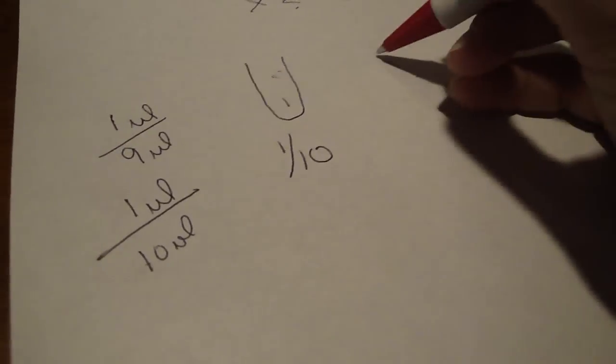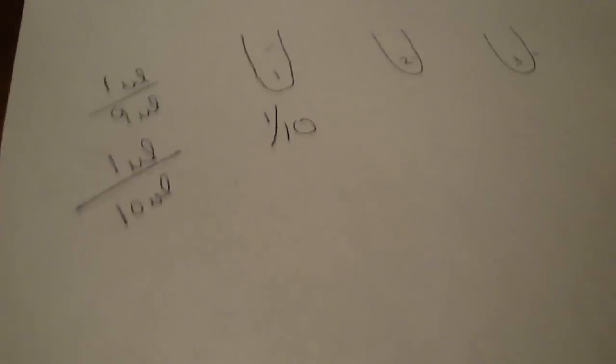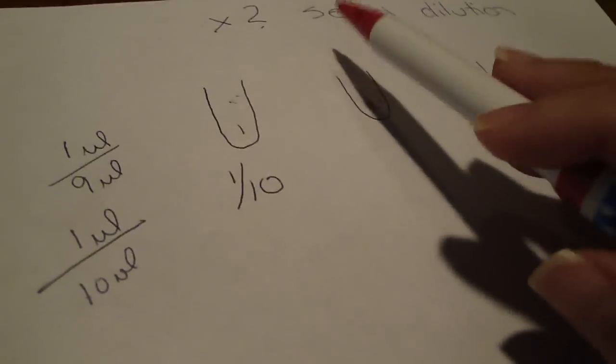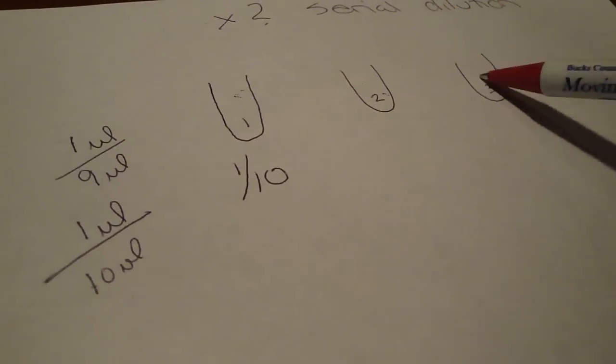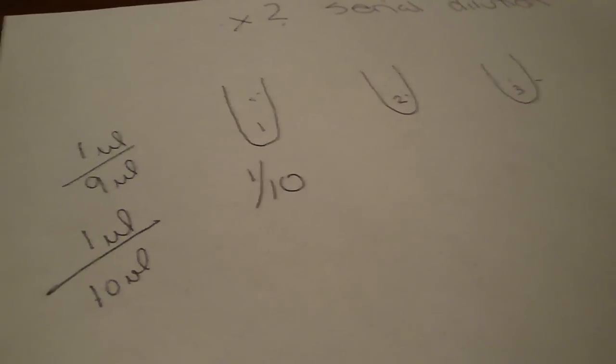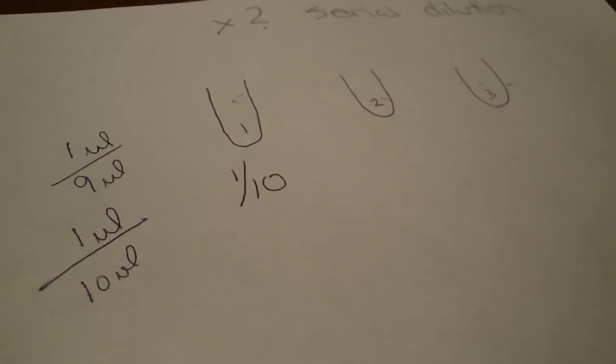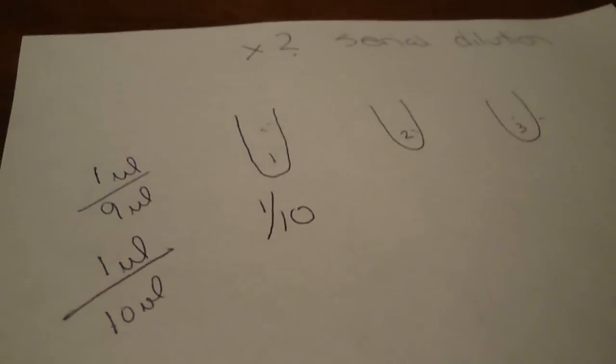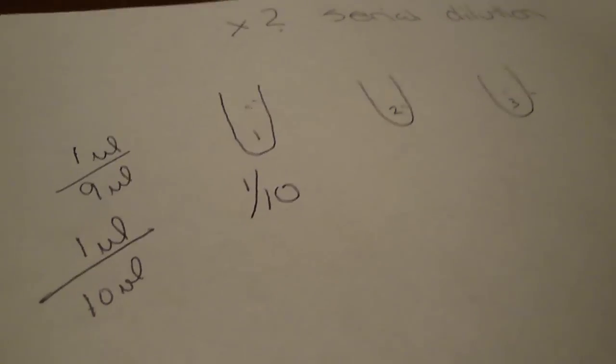So this is tube one, we're going to say three tubes just to keep it simple. So if I'm saying a times two serial dilution, I know that each of these tubes has to be a one to two. Times two serial dilution is one of the easier dilutions. It always means the same amount of sample to the same amount of diluent. I could have 500 million trillion microliters of sample and I would have 500 million trillion microliters of diluent.